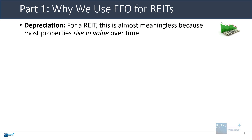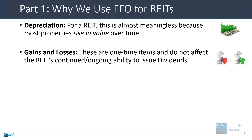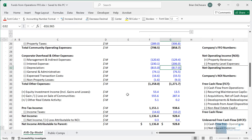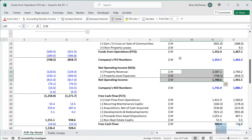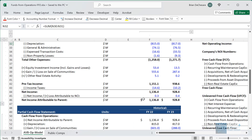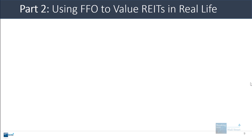For a REIT, depreciation is almost meaningless because most properties actually rise in value over time. Yes, they must replace, upgrade, and maintain properties, but generally if they buy a property and sell it later it's usually worth more, especially over a long period. Gains and losses are considered one-time items that don't really affect a REIT's ongoing ability to issue dividends. So REITs often target a specific percentage of FFO for dividends, which ends up resulting in dividends being over 90% of net income.